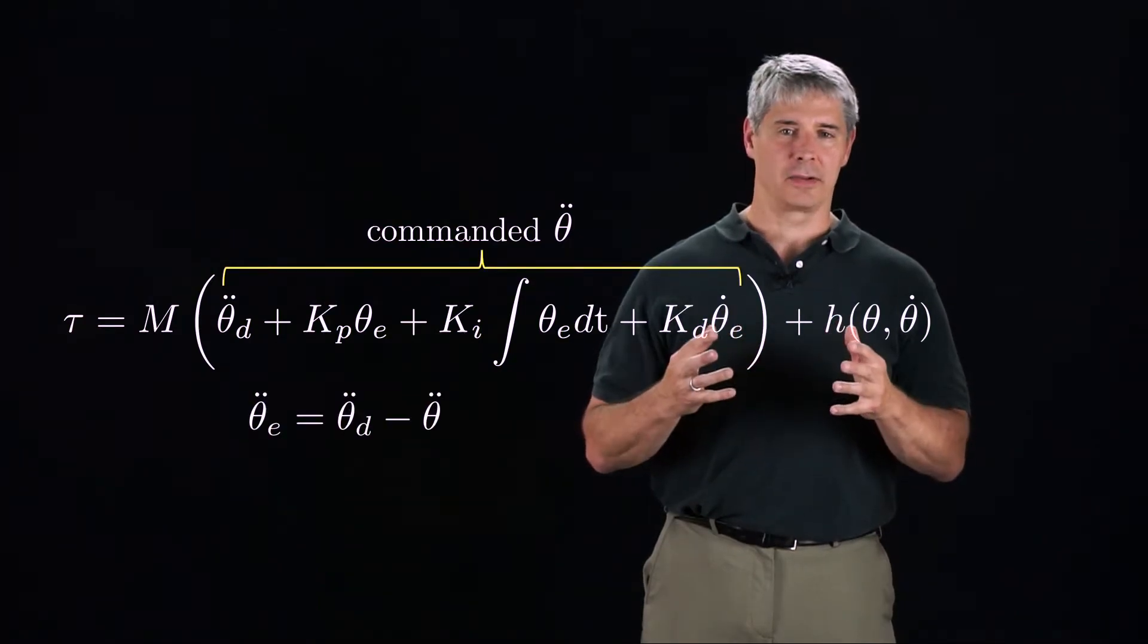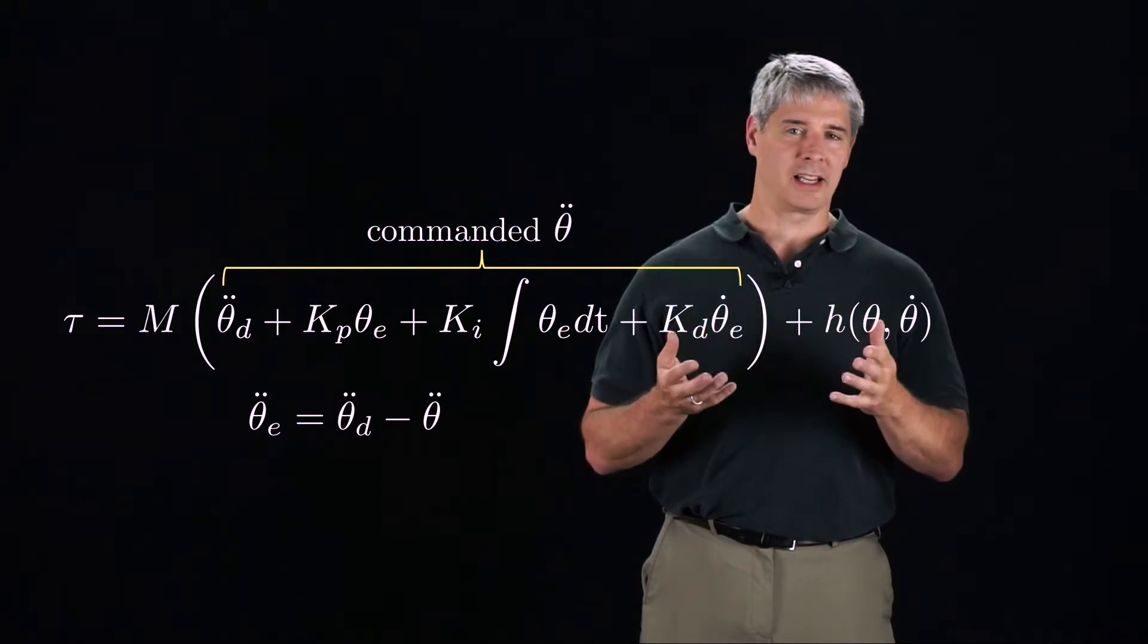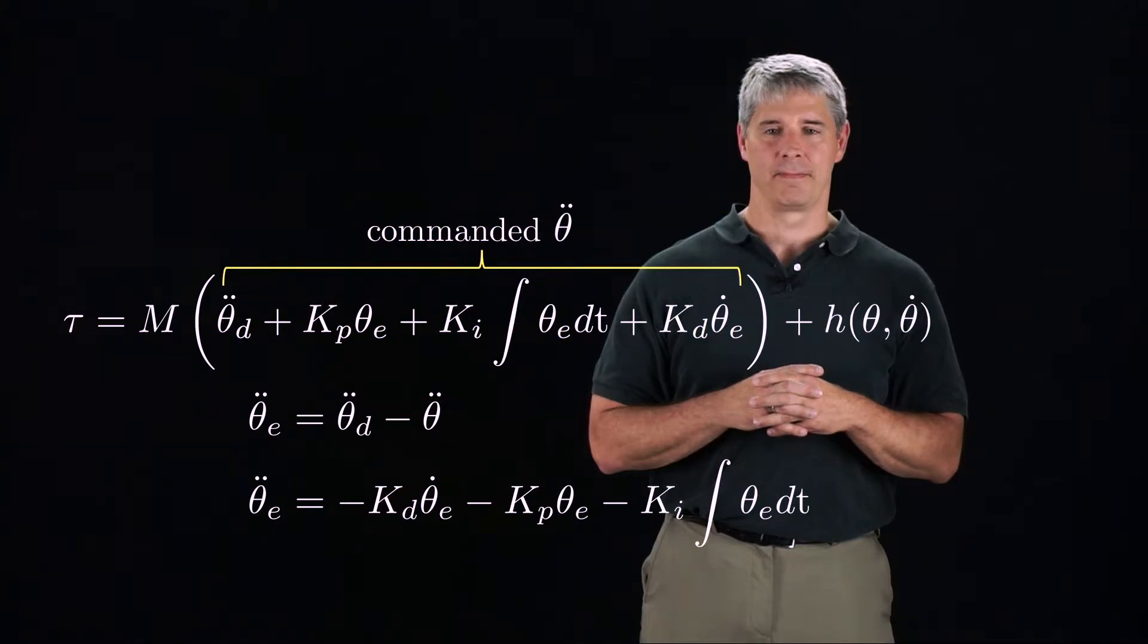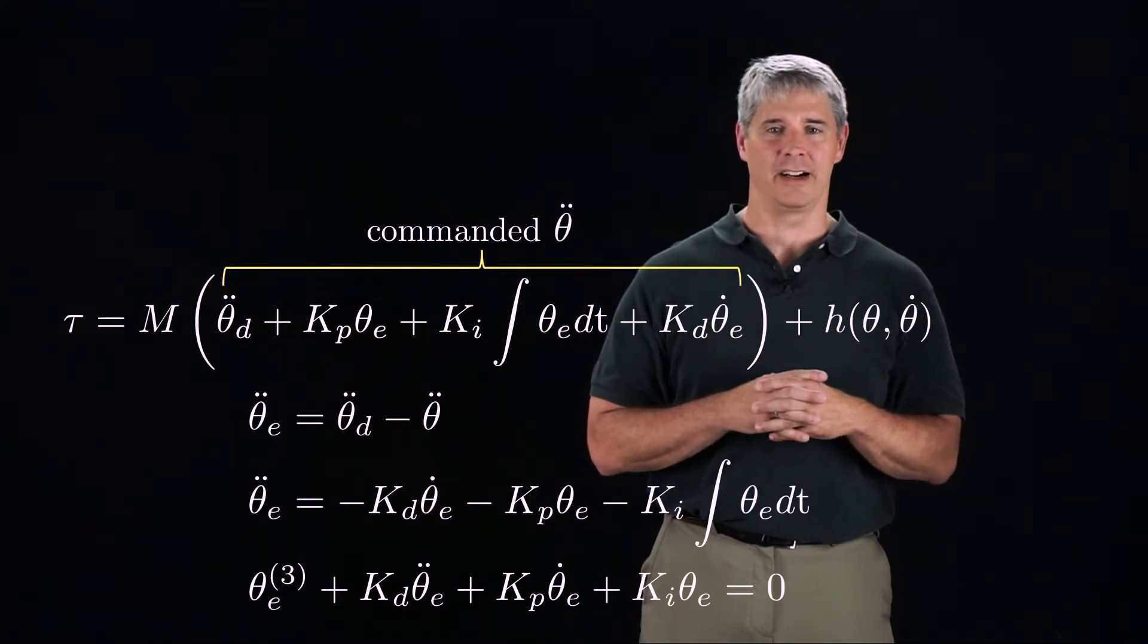The second derivative of the error is theta d double dot minus theta double dot. Plugging in the commanded acceleration, the error dynamics can be expressed like this. Taking the derivative, we get this third-order homogeneous differential equation, yielding zero steady-state error.